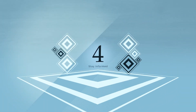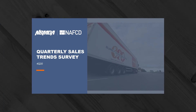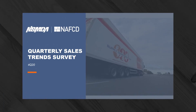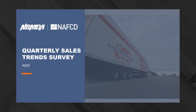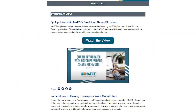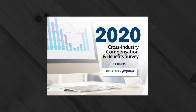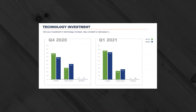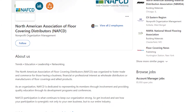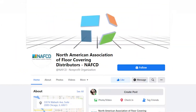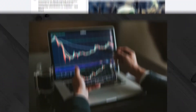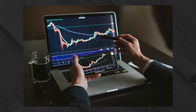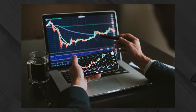Number 4: Stay informed. Leverage NAFCD data and content to stay abreast of trends impacting the distribution channel. Monthly newsletters, quarterly reports, regularly updated website resources and an active social media presence are available to you and your staff. This data will help you become a more knowledgeable and valued trading partner.